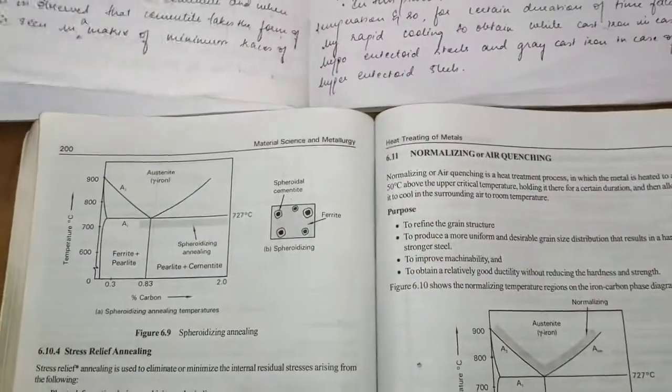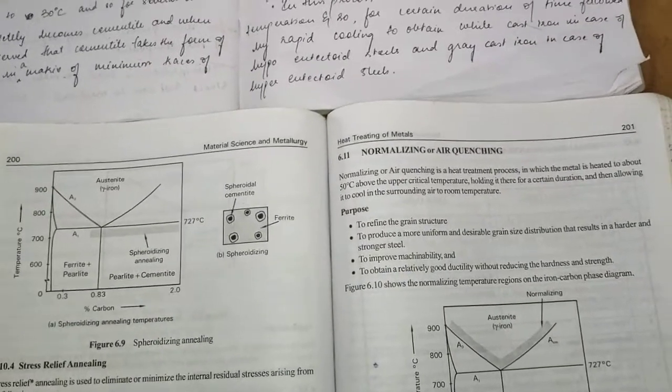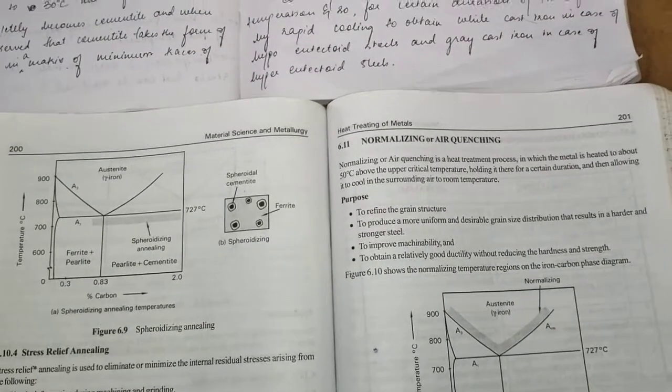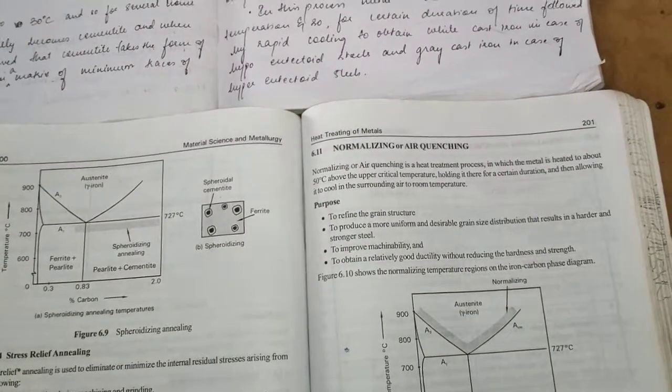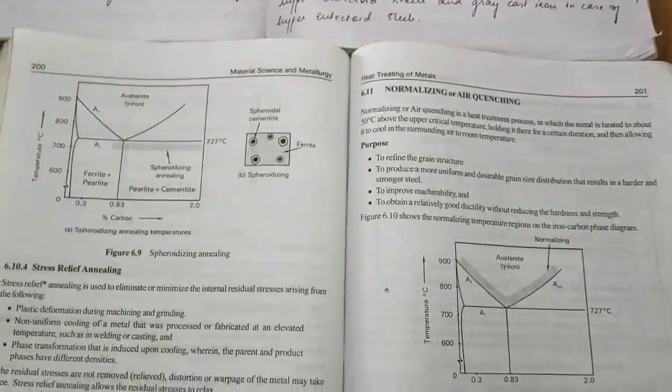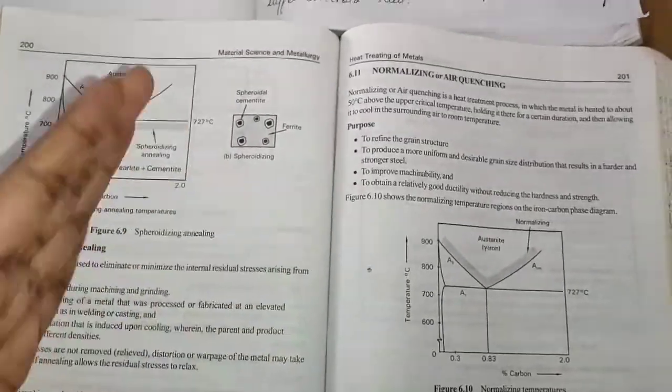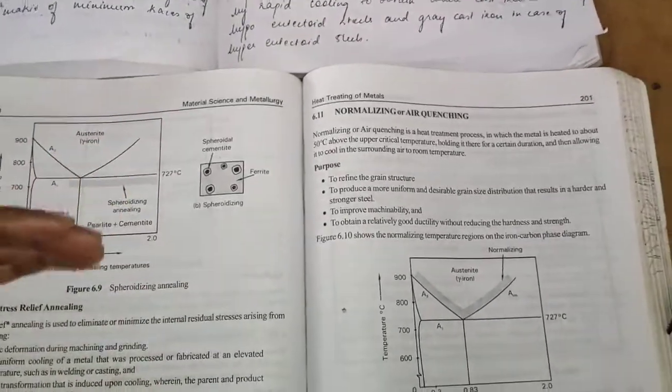It is employed for steels greater than 0.3 percentage of carbon to transform the lamellar perlite to spheroidal cementite. That is the main reason.